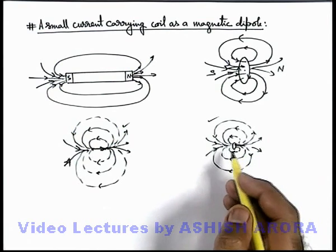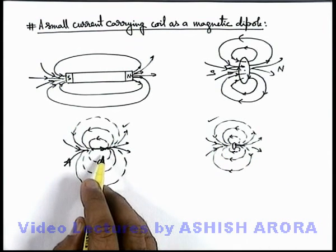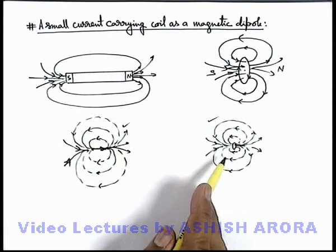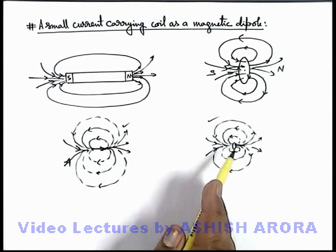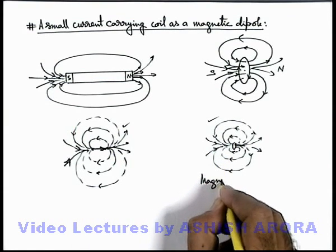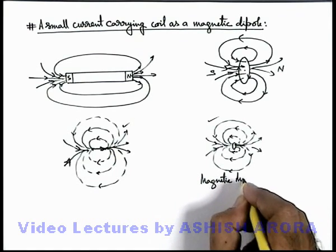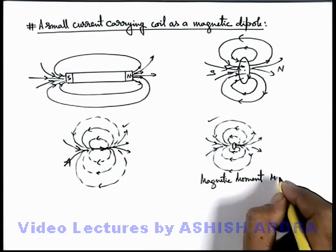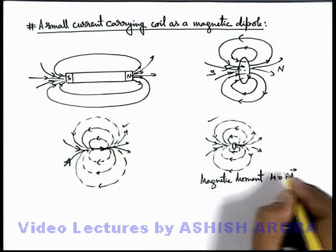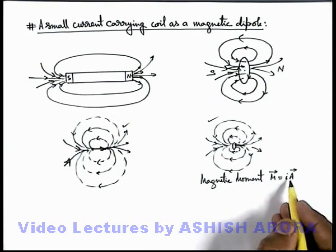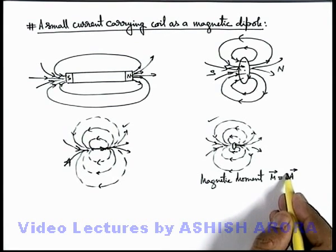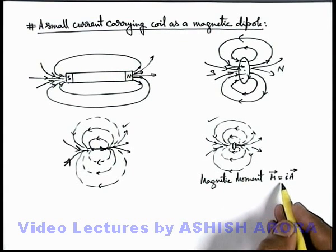So all the relations are equally applicable which we have developed for a short dipole — these are applicable for a very small coil also. And in case of a coil, its magnetic dipole moment or magnetic moment, as we already studied in previous topics, can be given as M = I·A, that is the product of current in the coil multiplied by the area vector, where the area vector direction is given by the right-hand thumb rule using the direction of current.